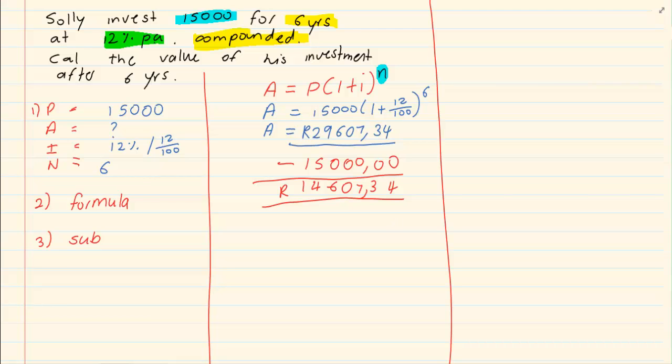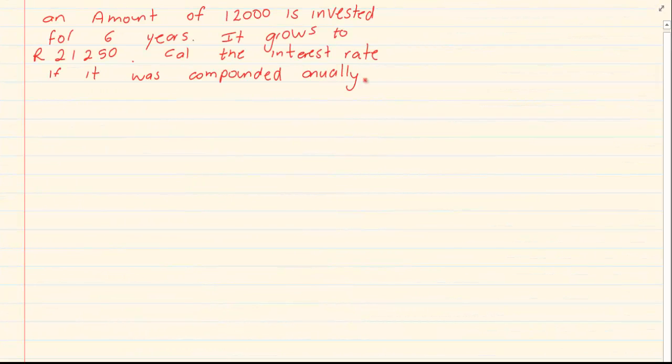When they are doing this question, they like to use the same formula but give you a different unknown. Take the following example.